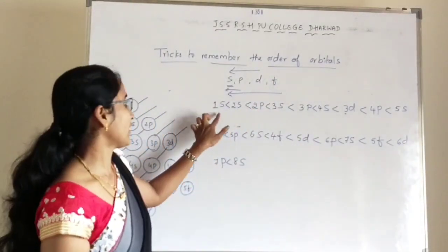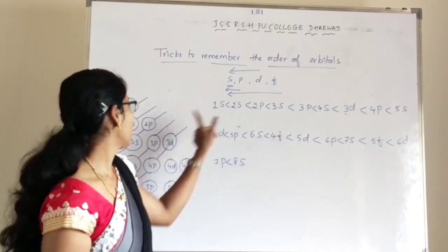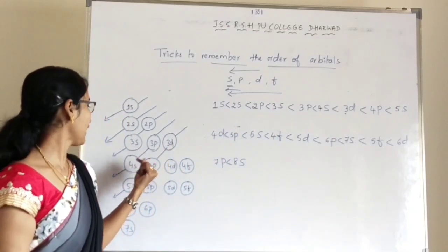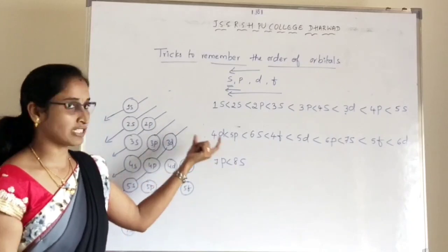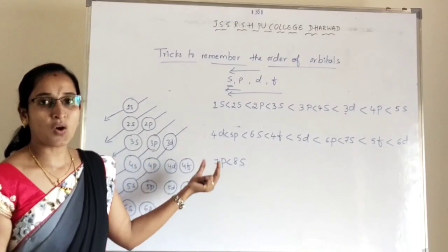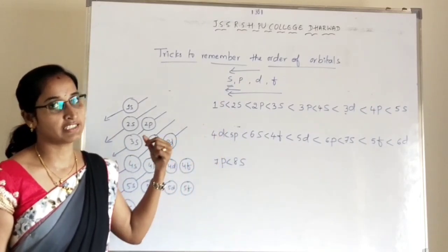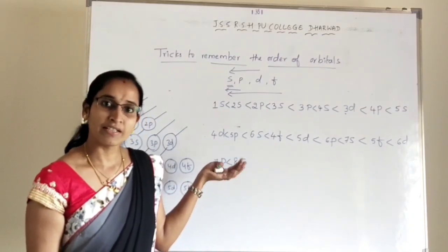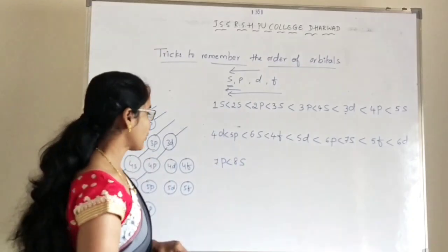So note the order: 1S, 2S, 2P, 3S, 3P, 4S, 3D, 4P, 5S — and similarly for the other atomic orbitals following the energy level diagram. This is one trick to remember the order of atomic orbitals in increasing energy, from which you can easily write the electronic configuration of higher-numbered elements in the periodic table.